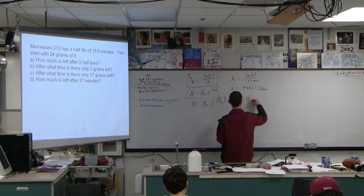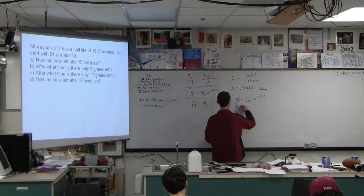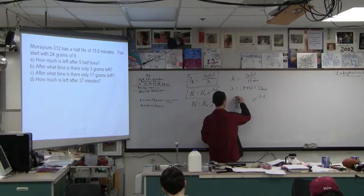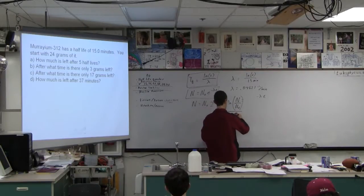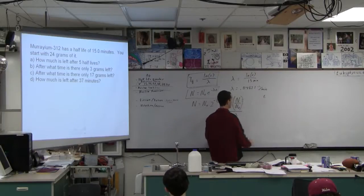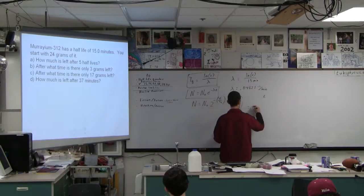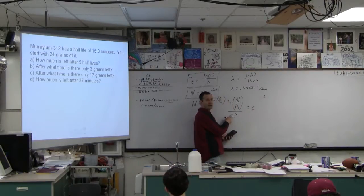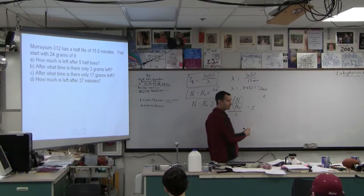And now we want to solve for the time, and so we go N is N-naught E to the minus lambda T. And then if we want to solve this for time, we get N over N-naught. Divided by minus lambda. Notice that the time is going to have reciprocal units of whatever lambda is, so this is 1 over minutes, so time is going to be in minutes when I do this.